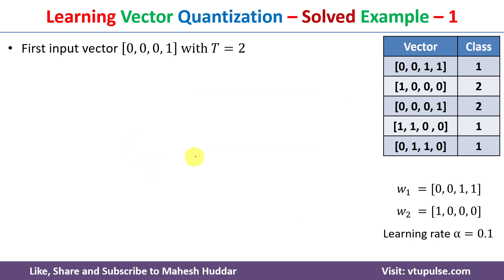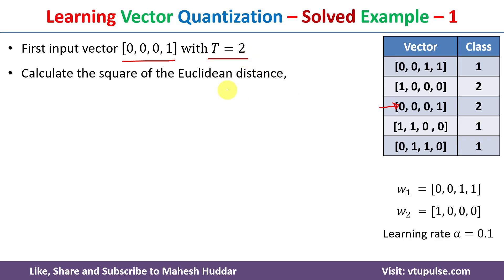We start with the remaining three input vectors and map them to one of the clusters. The first input vector is [0, 0, 0, 1] with a target class of 2. We need to calculate the Euclidean distance of this input vector to the two classes using the equation: d_j = Σ (w_ij − x_i)², where the summation runs from i=1 to 4, since each vector has four components.